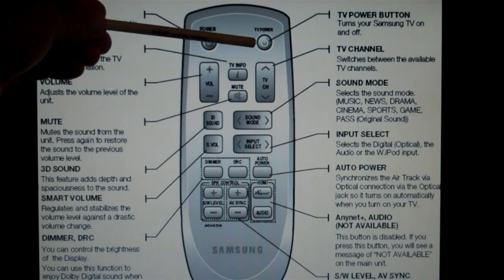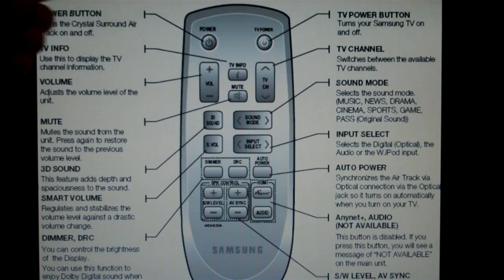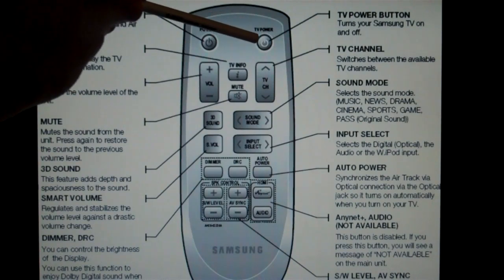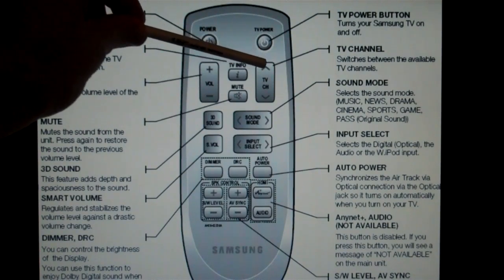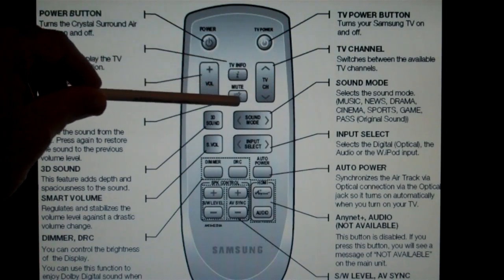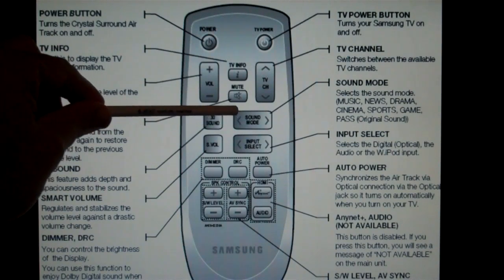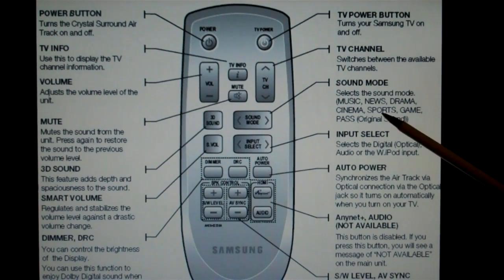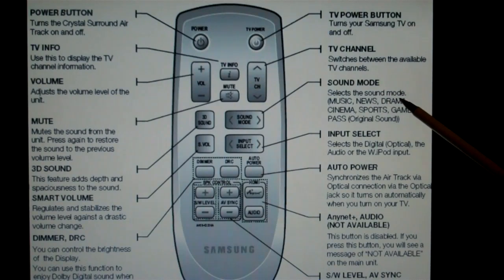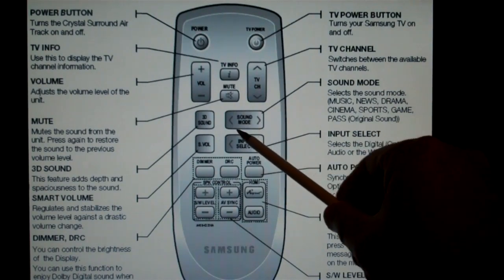If you have a Samsung television connected to the soundbar, which you don't have to use a Samsung TV—you can use any brand—but if you happen to have a Samsung TV, you can turn the TV on with this power button as well. You can change your channels right here. And your sound modes, where we talked about if you're listening to music or news or drama or something like that, you would change that right there.